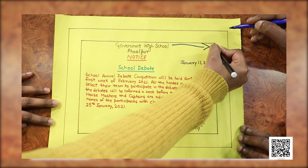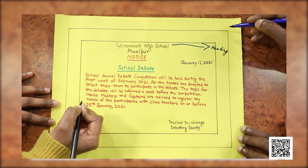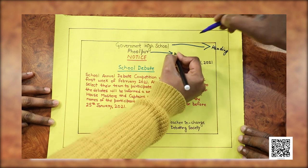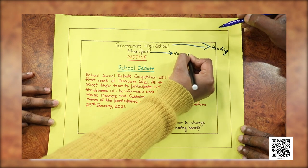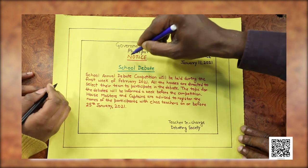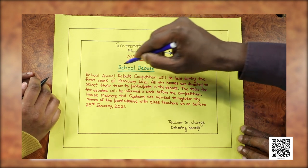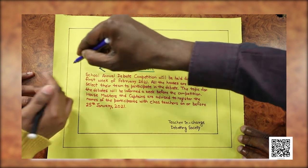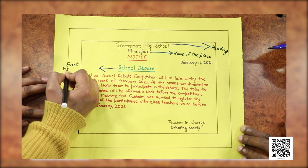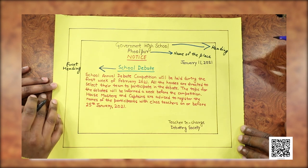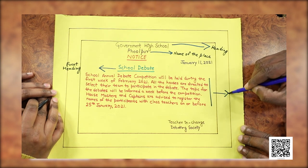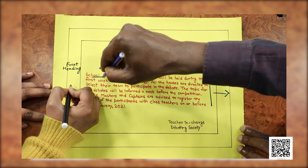So the heading is the school, college, or Panchayat Union — the name of the institution and place. Then we write 'NOTICE.' And what is this? This is the event heading — the heading for the event for which you are giving the notice. You may write NOTICE in all caps or in title case, no issue.